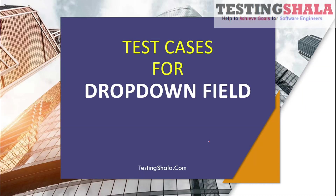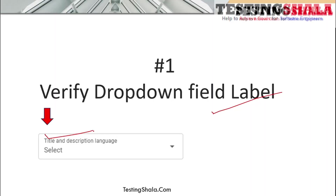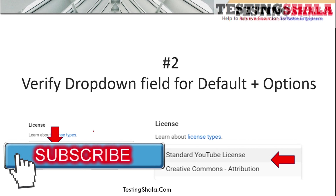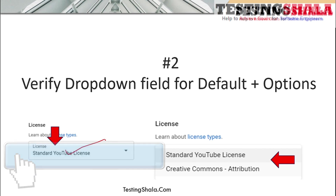Let us look at the various test scenarios you can write for a dropdown field. The first validation you should make is that every dropdown should have a label. The second one is that a dropdown will sometimes have a default value — it may have 100 different options, but by default one value will be selected.